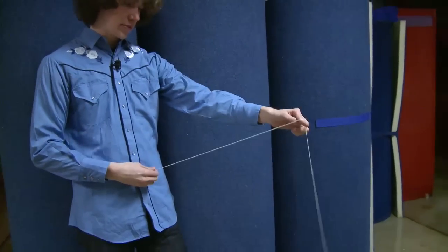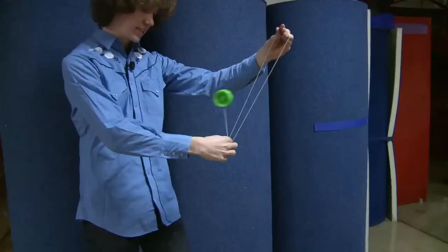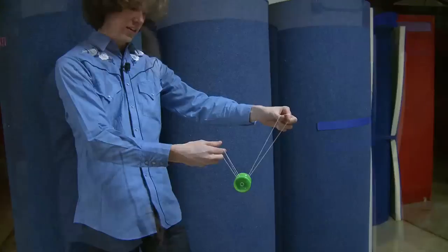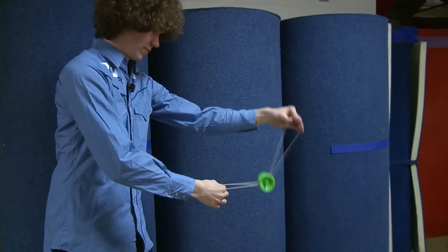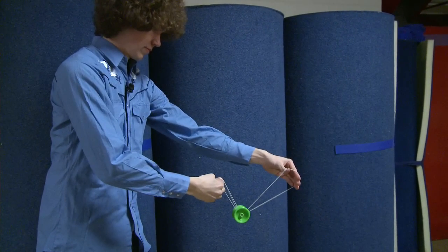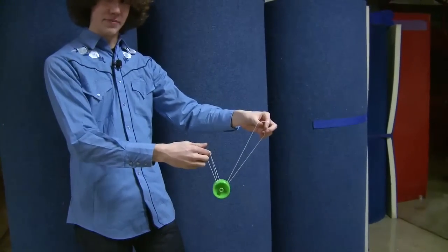For Spin Blaster, you start with the front style throw, and you're going to go like you're doing split bottom out, and instead of landing on the one string, you land on top of both, like this. Usually not what people tell you to do, but don't listen to them.